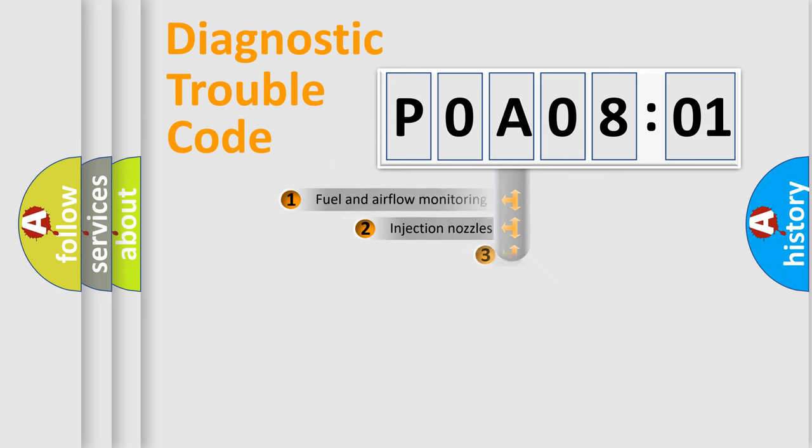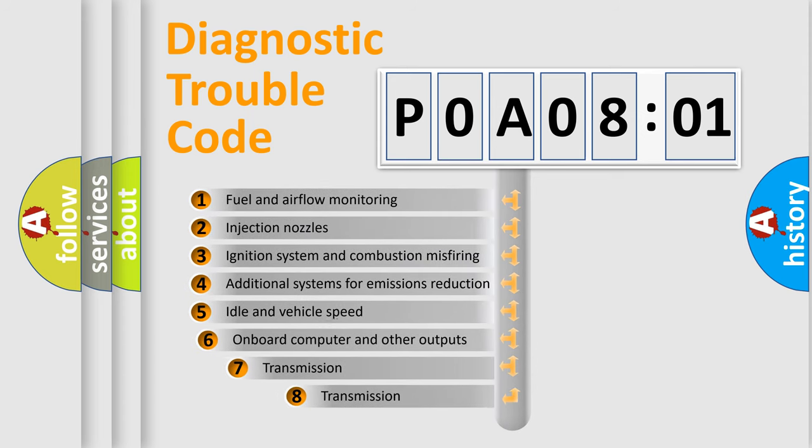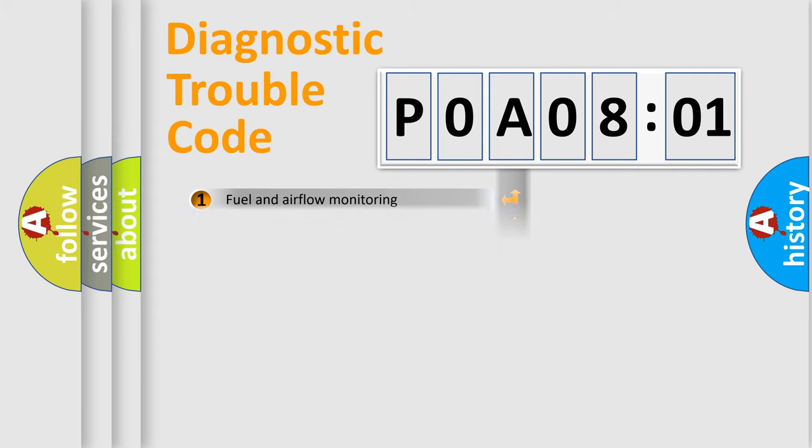Only the last two characters define the specific fault of the group. The add-on to the error code serves to specify the status in more detail, for example, short to the ground. Let's not forget that such a division is valid only if the second character code is expressed by the number zero.